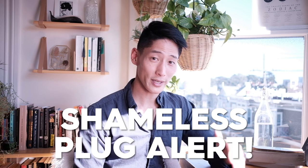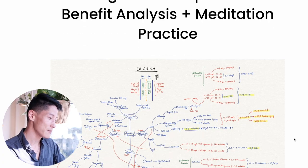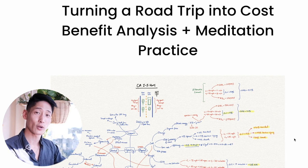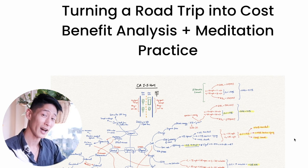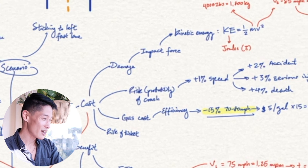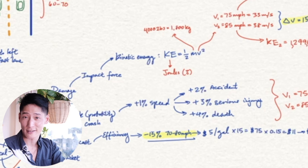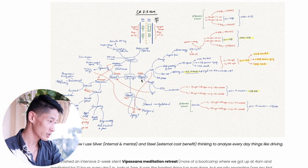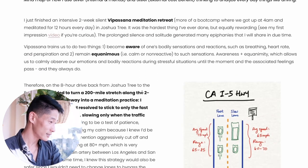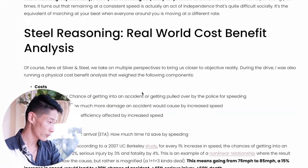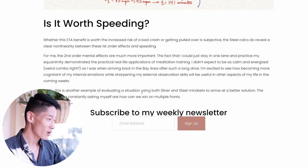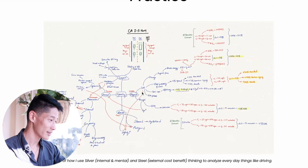Finally, if you have signed up for my weekly newsletter, nearly every article has a mind map associated with it. For example, this one is coming back from my two-week meditation retreat — I turned the road trip, the 200-mile stretch along I-5, into a meditation practice, and I also did a cost-benefit analysis around the increased risk of accidents as well as impact damage to the car. In order to write this article, I created this mind map along with illustrations, which then translated to the entire article together with different physics equations and probability analysis. I would not have been able to write it straight up without creating this mind map first to organize all of my thoughts.